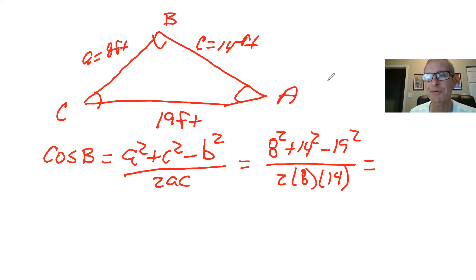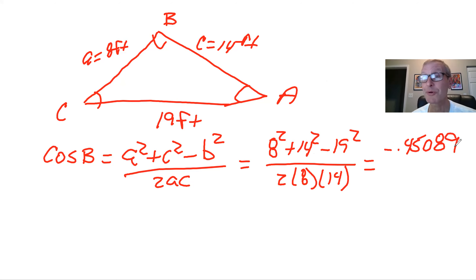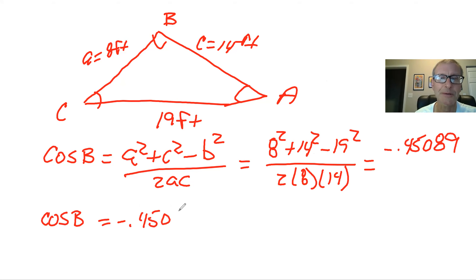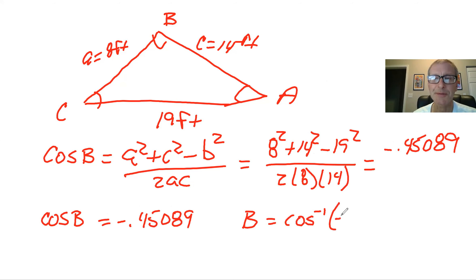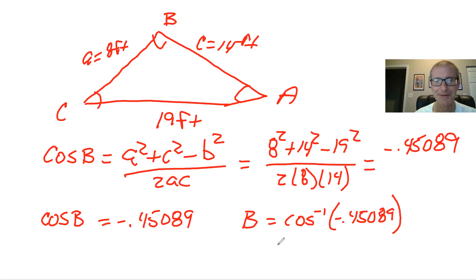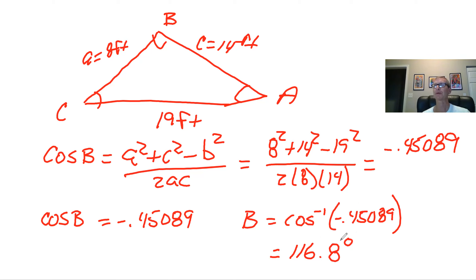When you do this calculation, you'll realize that 19 squared is actually bigger than eight squared plus 14 squared, so this turns into a negative number — about negative 0.45089. So we know we're in quadrant two. Cosine of B equals negative 0.45089. The good news is cosine inverse is defined in the first and second quadrant, so if you use your calculator, you're always going to get the right answer — you don't have to worry about reference angles. And if you got out your calculator, you would get 116.8 degrees.